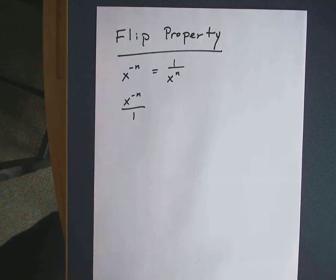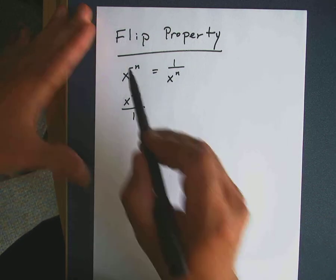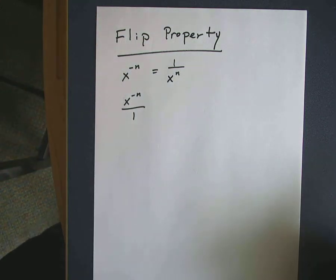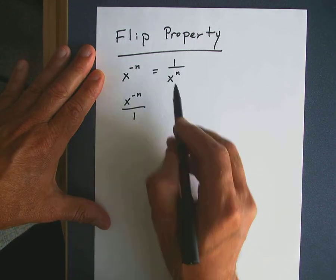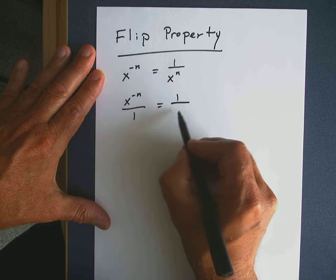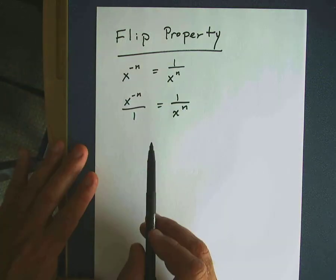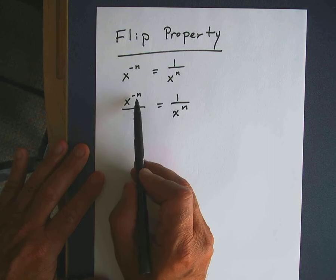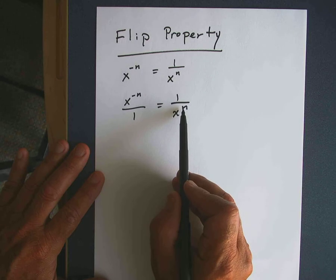But the flip property, what it would allow you to do is take an expression that's a negative exponent, flip it to the other side, so in this case it's in the numerator, flip it to the denominator with the positive exponents. So you can take some term that's raised to a negative power, flip it down to the denominator and write it with the positive exponent.